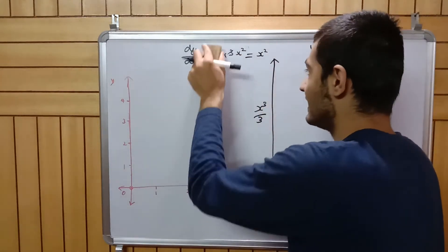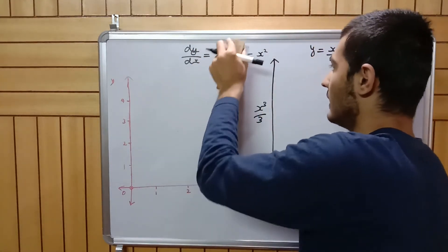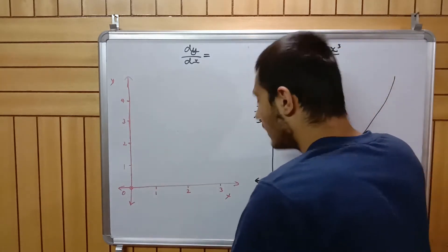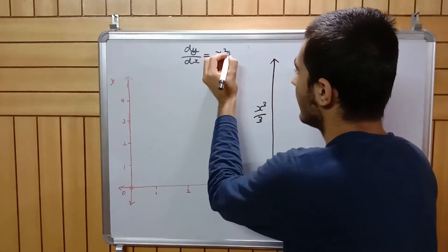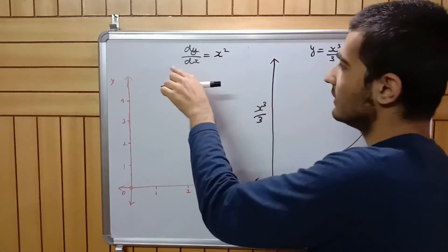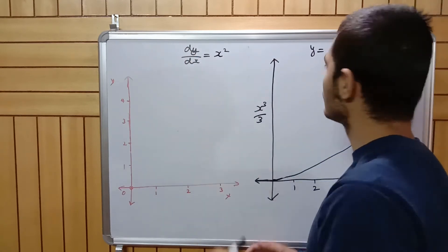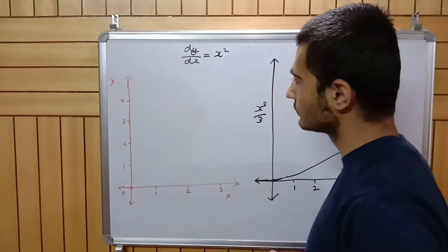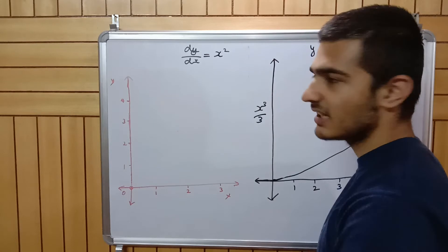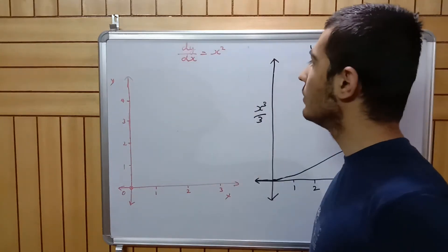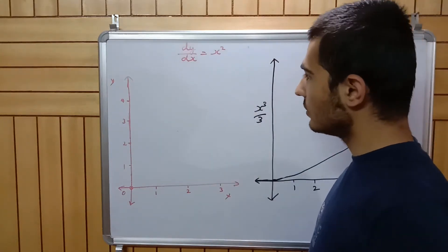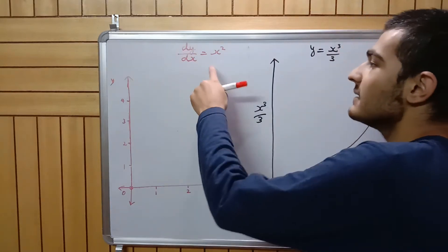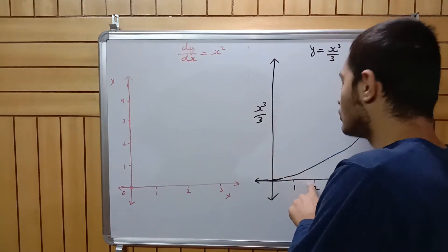I'll remove the intermediate step and write it more neatly. The derivative is dy/dx equals x squared. So what this means is that if I'm at x equals two, I can use this to find the slope of the tangent.